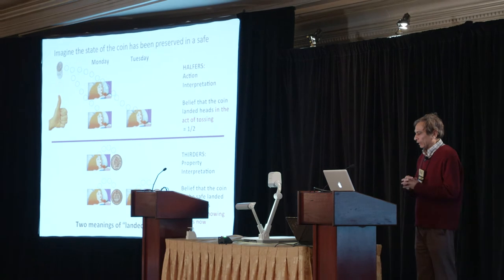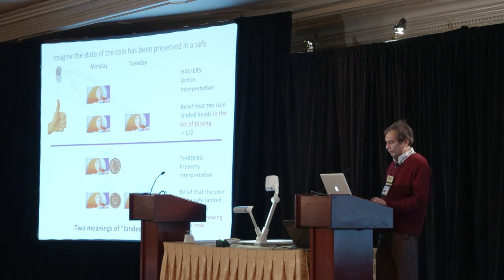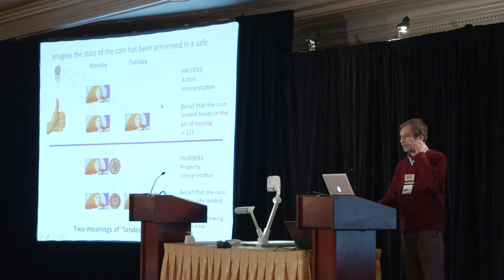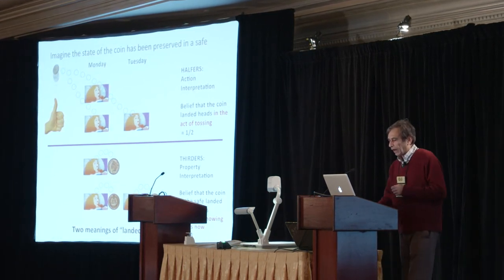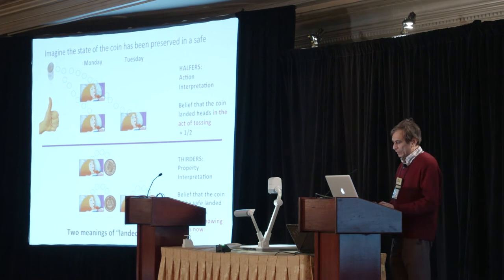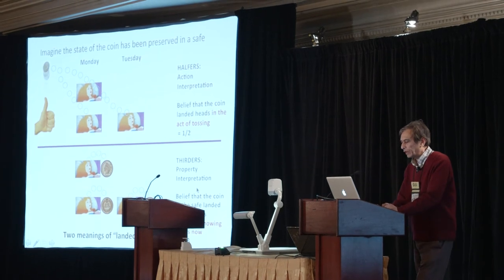So here's the intuition you have to develop to get these two interpretations. In the case of the halfers, the image they have is that of the coin toss. Sleeping Beauty is thinking about the coin toss, and being a fair coin, of course the answer is half. But under the property interpretation, she's only concerned with the property. Imagine that the coin was preserved in a safe, and if you look at the coin in the safe — that's what Sleeping Beauty is thinking of — what would the coin in the safe show right now? And the answer there is one third.